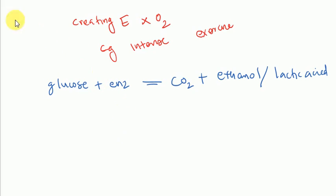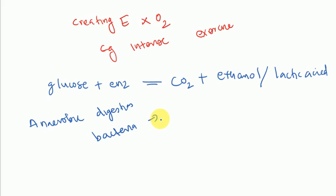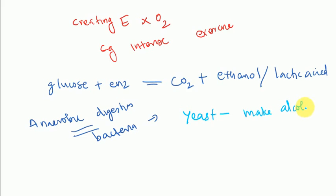Anaerobic digestion is a process through which bacteria break down organic matter — such as animal manure, wastewater, biosolids, and food waste — in the absence of oxygen. In yeast, anaerobic reactions produce alcohol, while in human muscle tissue they produce lactic acid.